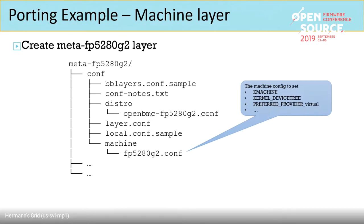The first step is to add a machine layer. We create a meta-Dubai layer and add the configs. The configs specify the machine, the kernel device tree, and the preferred providers like some IPMI configs and other configs. This is simple.